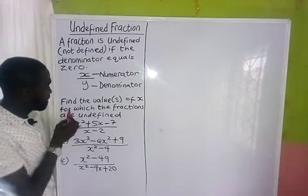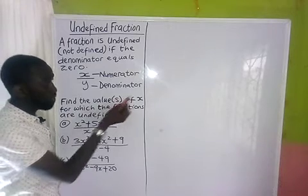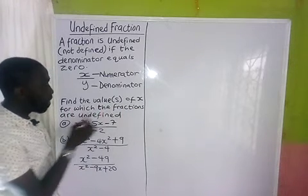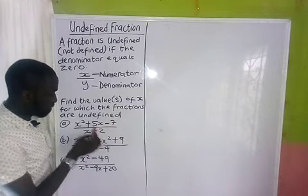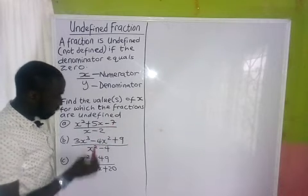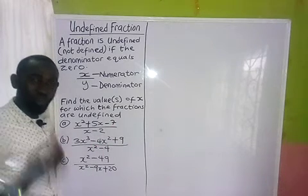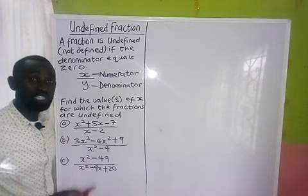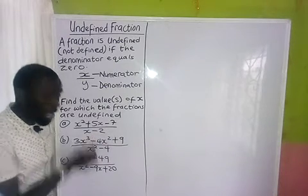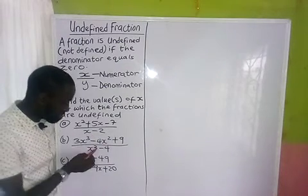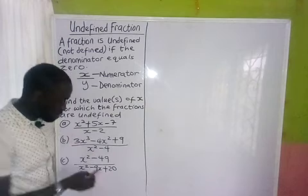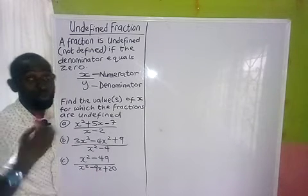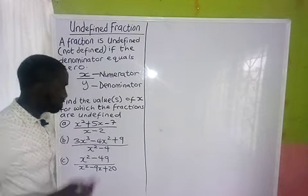Which implies, if you want to solve any question on undefined fractions, we just take the denominator only — the one below — and we equate it to zero. So the questions to be solved are: find the value or values of x for which the fractions are undefined. We take each denominator and equate it to zero to get our result.